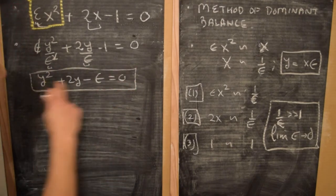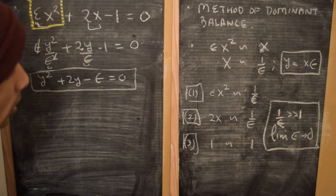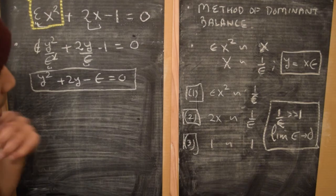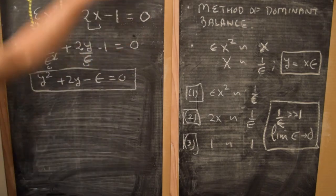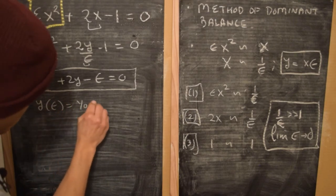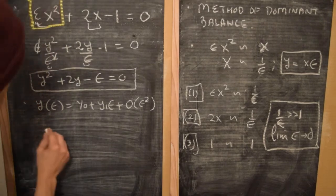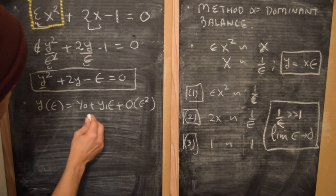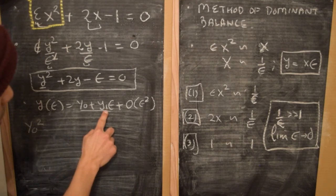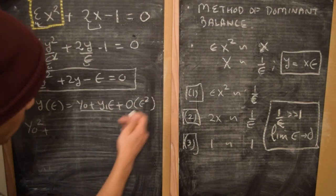Note that y is a term of order 1, so the first two terms are order 1 and the last term ε is much smaller than these two, which is consistent with the scaling relation obtained from the method of dominant balance. Now we can solve this equation by making an ansatz that y(ε) = y₀ + y₁ε + O(ε²), and substitute it into this equation. Expanding y² gives y₀² + y₁²ε², which we can ignore.